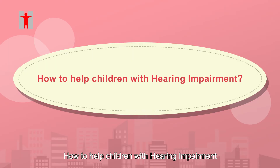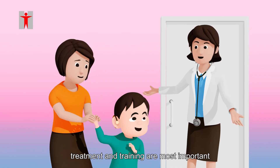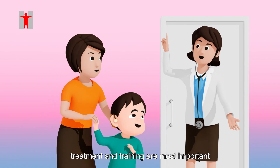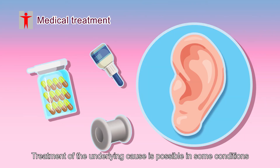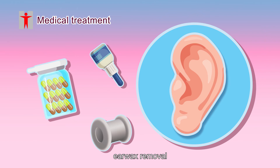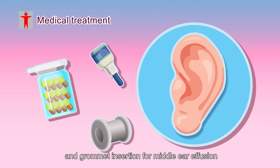How to help children with hearing impairment? Early diagnosis, treatment and training are most important. Treatment of the underlying cause is possible in some conditions, for example, earwax removal, antibiotics treatment for otitis media, and grommet insertion for middle ear effusion.